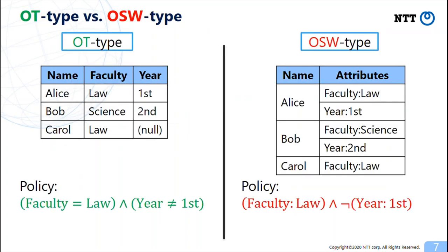In the OT type, attributes are regulated as in the left side and policies are specified like the green formula. On the other hand, in the OSW type, attributes are regulated as shown in the right side and policies are specified like the red formula.